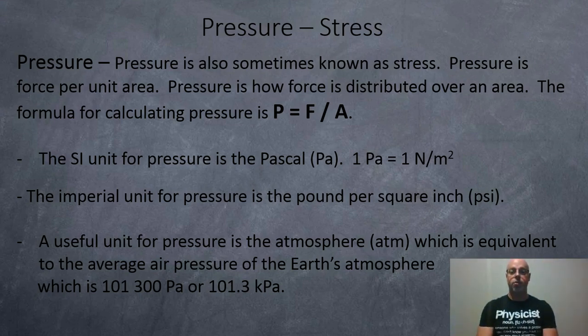So the SI unit for pressure is the Pascal. One Pascal is equal to one Newton per square meter. And the imperial unit for pressure is the pound per square inch, which is commonly called the PSI. A useful unit for pressure is the atmosphere, the ATM, which is equivalent to the average air pressure of the Earth's atmosphere, which is around 101,300 pascals, or 101.3 kilopascals.